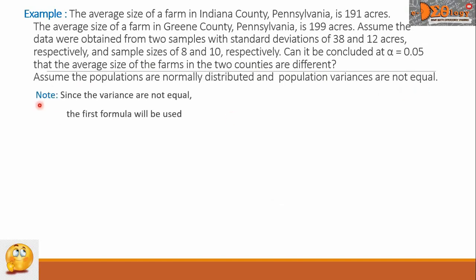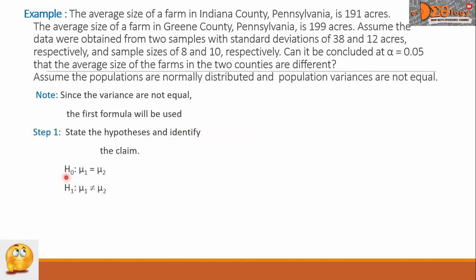To solve this, since the variances are not equal, the first formula will be used. Step 1: State the hypothesis and identify the claim. The null hypothesis H sub 0 is: mu sub 1 equals mu sub 2 — there is no significant difference between the two average farm sizes. The alternative hypothesis H sub 1 is: mu sub 1 is not equal to mu sub 2. In this problem, the claim is the alternative hypothesis.